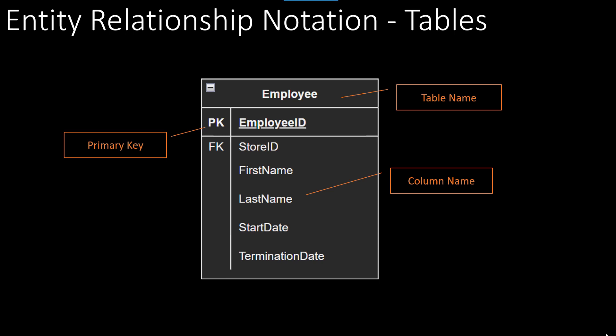Let's look at an Entity Relationship Diagram table using the IDEF1X notation. One of the first things to point out is the table name, which is shown at the top. Secondly is the primary key — as you know, the primary key uniquely identifies a row in the database. The primary key will have 'PK' shown next to it, and also the column name of the primary key is underlined.